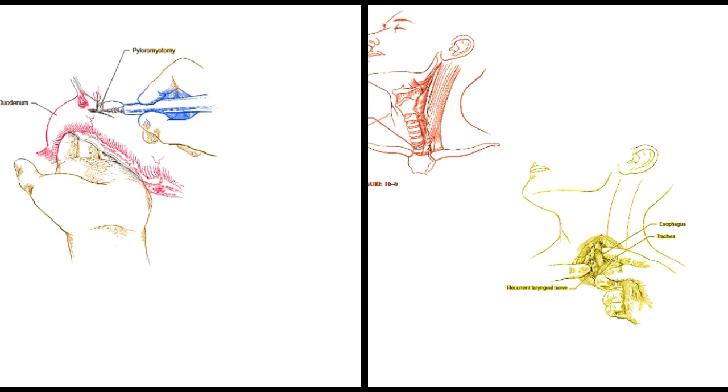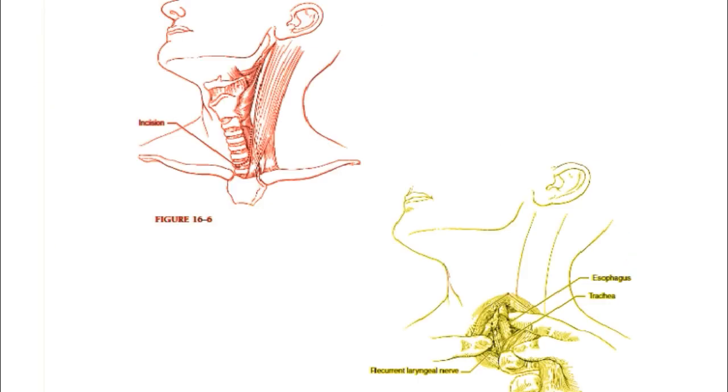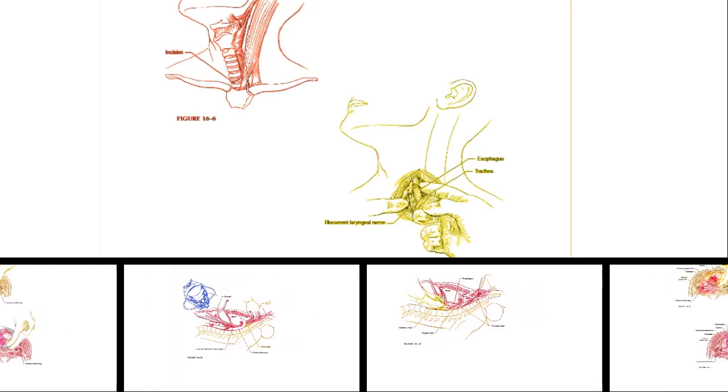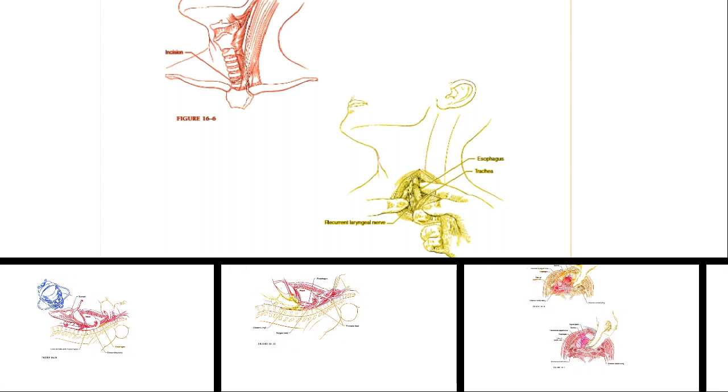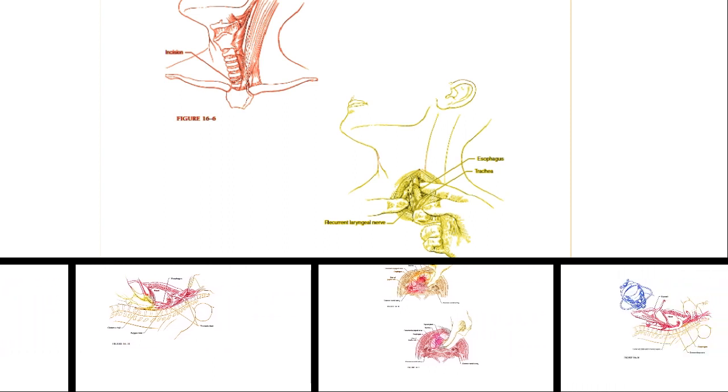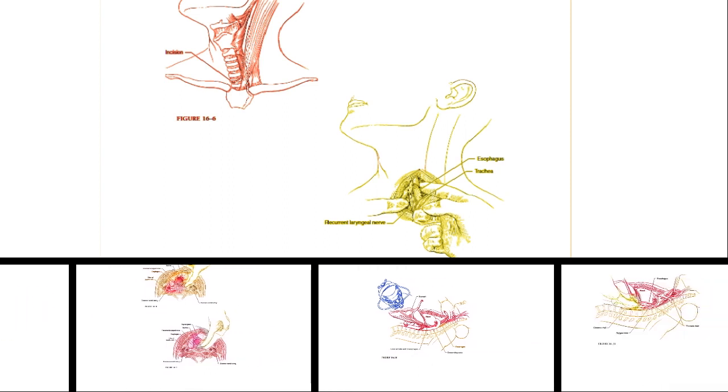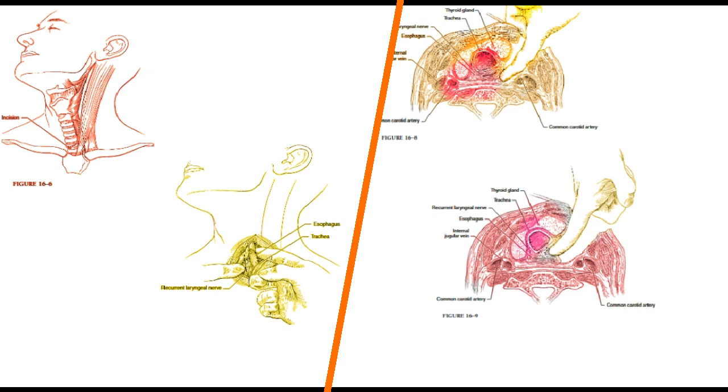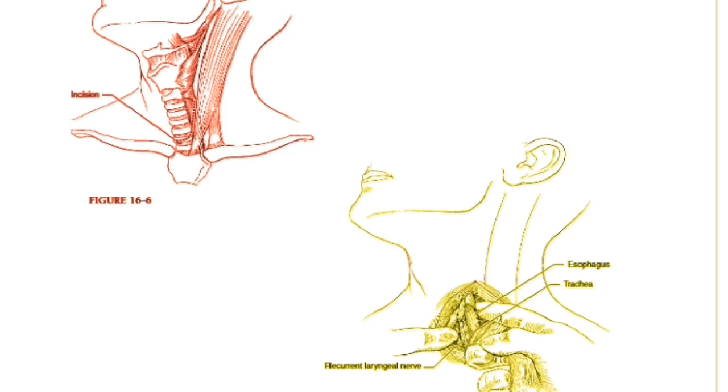The cervical dissection begins by placing an incision along the anterior border of the left sternocleidomastoid muscle from the hyoid bone to one centimeter above the clavicle. The incision is carried through the platysma to expose the deep cervical fascia. Figure 16-6. The sternocleidomastoid muscle and carotid sheath are retracted laterally while the thyroid gland and trachea are retracted medially to expose the proximal esophagus. Occasionally the middle thyroid vein and inferior thyroid artery need to be divided for adequate exposure. Care should be taken to avoid excessive retraction or placing instruments in the tracheoesophageal groove where the recurrent laryngeal nerve can be injured.